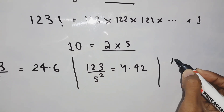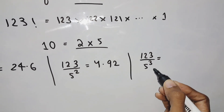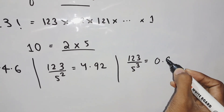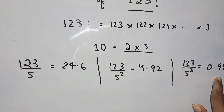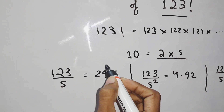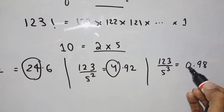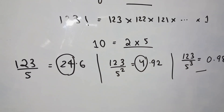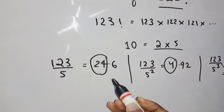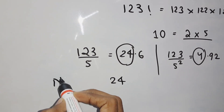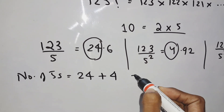Similarly, 123 ÷ 5³ = 123 ÷ 125 = 0.98, which is less than 1, so we stop here. We take only the integer parts: 24 + 4 = 28. So the number of 5s in 123 factorial is 28.